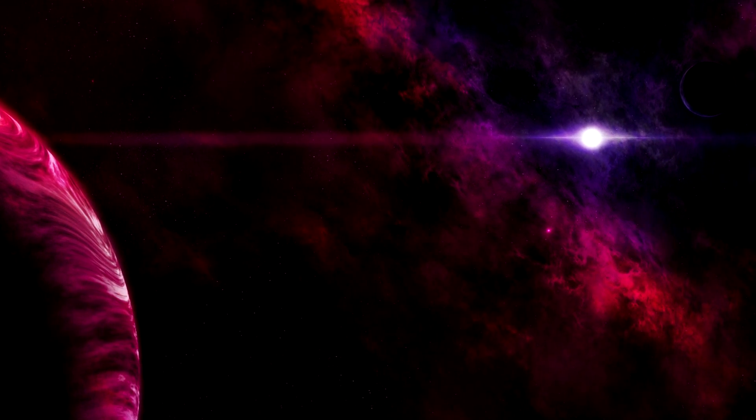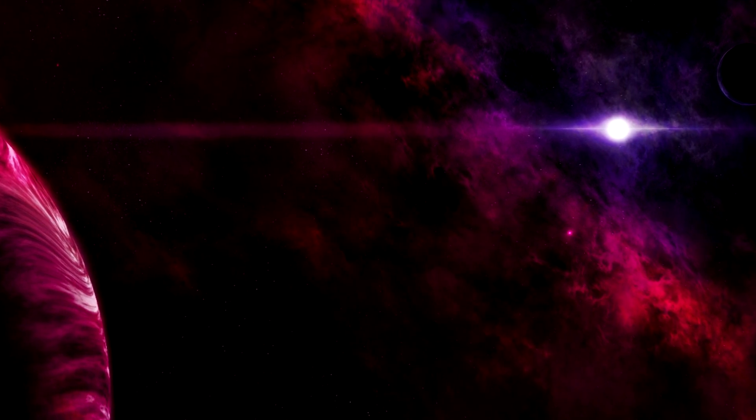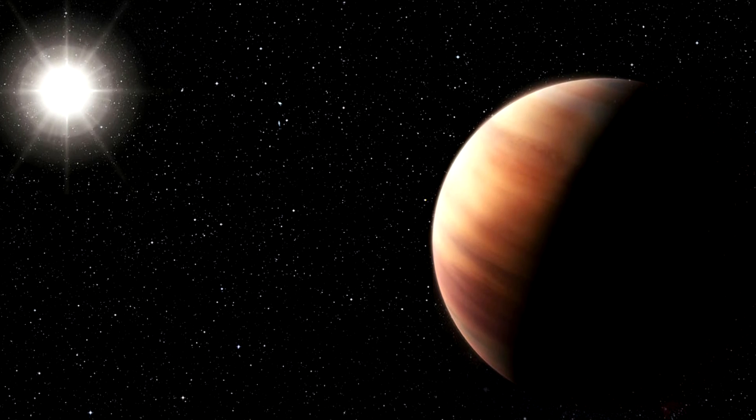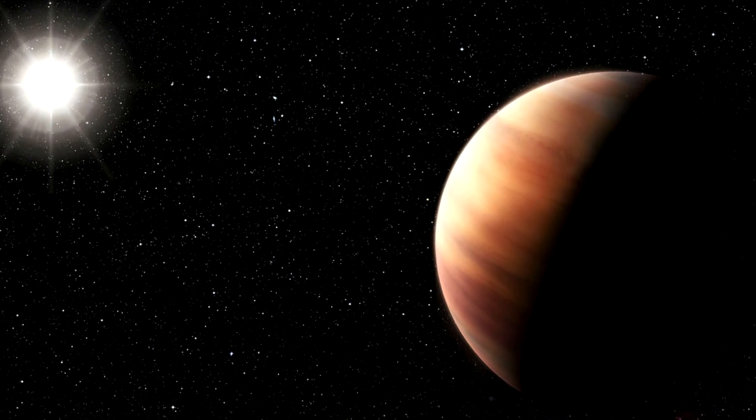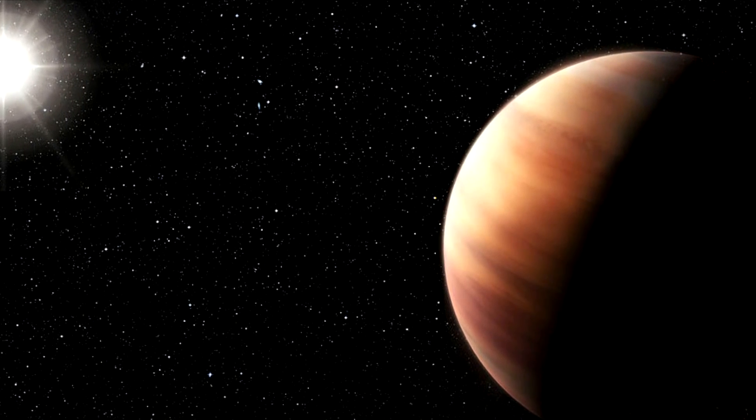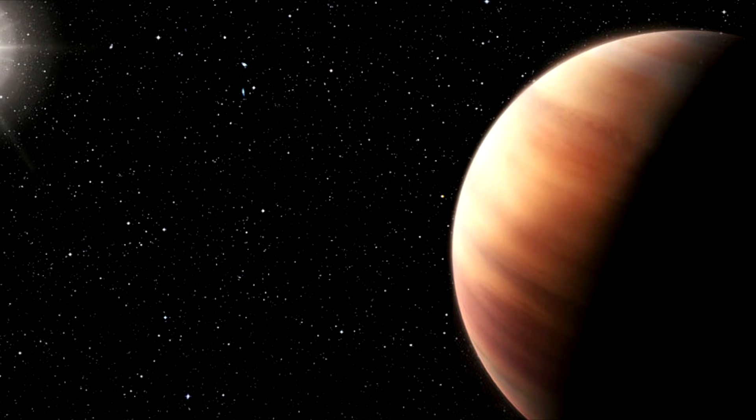However, the sun is much rounder because it rotates only once every 27 days, so even though it is 1.4 million km (870,000 miles) in diameter, its equatorial bulge is a mere 10 km (6.21 miles). To put this in perspective, that's less than the width of a human hair on a beach ball.